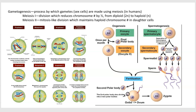Gametogenesis is simply either spermatogenesis or oogenesis, and it's just the specialized way of saying meiosis. So meiosis, as we know from lab, has two divisions: meiosis 1, which is the reduction division, and meiosis 2, which is kind of more of a mitosis-like division that keeps that haploid number.